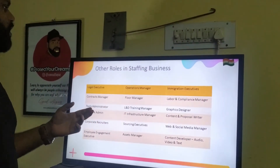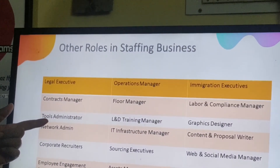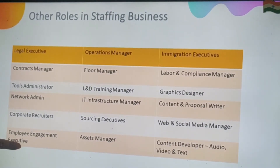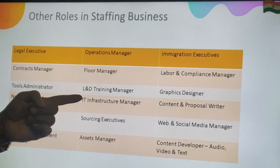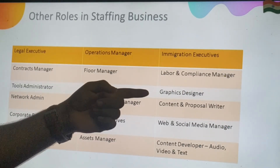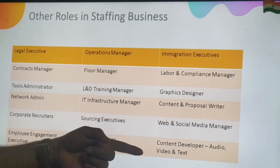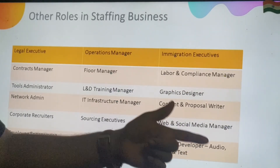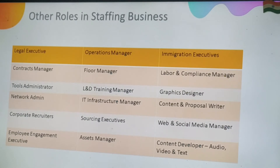Other roles in staffing businesses include Legal Executives, Contracts Manager, Tools Administrator, Network Admin, Corporate Recruiters, Employee Engagement Executives, Operations Manager, Floor Manager, L&D Training Manager, IT Infrastructure Manager, Sourcing Executives, Assets Manager, Immigration Executives, and Labor and Compliance Manager. Legal people handle contracts, legality of the organization, reviewing paperwork, and inter-company agreements. A Contracts Manager ensures all contracts are stored, retrievable, and renewed on time. A Tools Administrator manages and monitors IT tools for authorization and identity. Network Administration manages the company's network support and IT help desk.